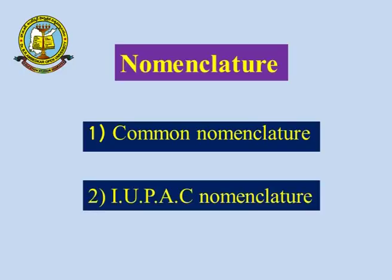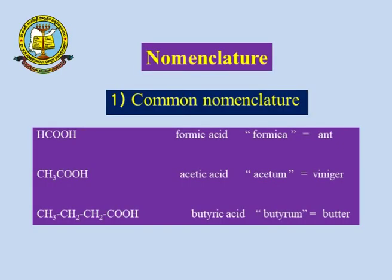Coming to the nomenclature of carboxylic acid, we follow two methods: the first is common nomenclature and the second is IUPAC nomenclature. Common nomenclature is given based on the nature, existence, and place of availability of the compound, and does not have scientific validity. For example, HCOOH is called formic acid — in Latin, 'formica' means ant, and this acid is extracted from red ants.